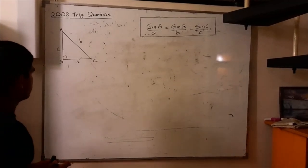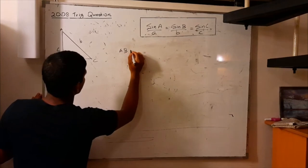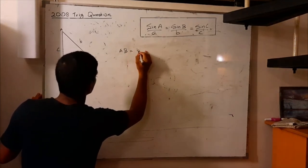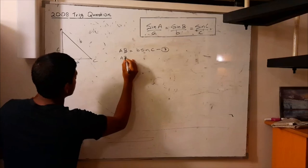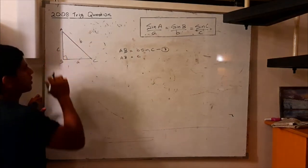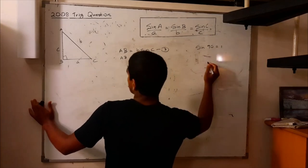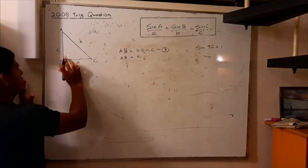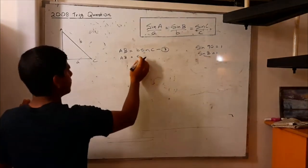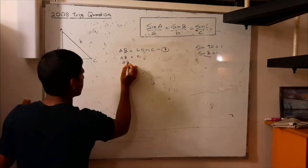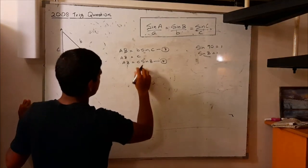Now let's prove the sine rule for a right angle triangle. Like we did for the acute angle triangle, we take side AB and write it using two different equations. We can say AB equals b sin C — equation 3. We can also say AB simply equals c, because it is side c. We know that sin 90° equals 1. The angle B is 90 degrees, so sin B equals 1. Therefore AB equals c sin B — equation 4, since c times 1 is c.